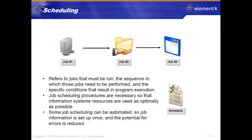We also have to worry about scheduling — making sure jobs run correctly, in sequence, and determining if it's acceptable for one job to run if a prior job fails. Scheduling can be automated or manual, but if you automate tasks, you must stay on top of the output and reports to confirm they actually completed. Recall the story of backups running every night but nobody checking whether the job actually completed properly.